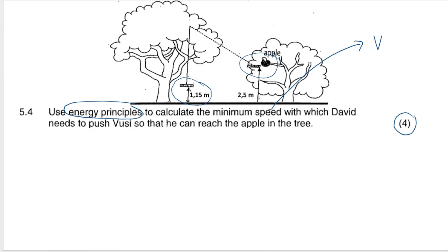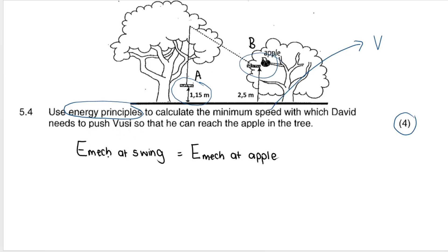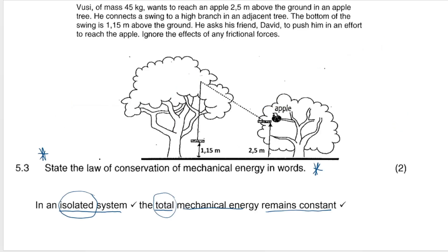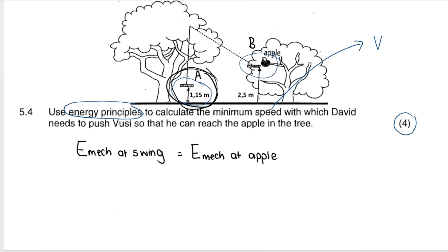We have two situations: mechanical energy at the swing and mechanical energy at the apple — two positions on the diagram, which you can call A and B, or before and after. Mechanical energy at the swing equals mechanical energy at the apple. They are equal because in an isolated system the total mechanical energy remains constant — it's the same at all points in the system.